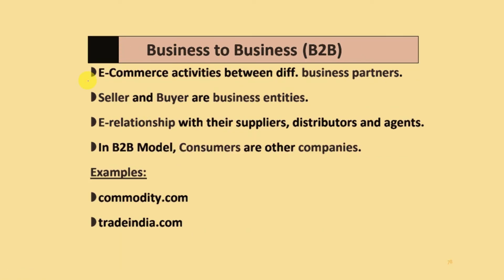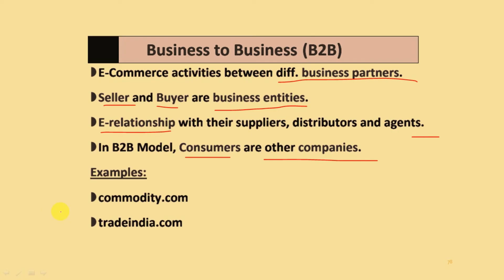Business to Business (B2B): this involves activities between different business partners. Both sellers and buyers are business entities. It includes e-relationships with suppliers, distributors, and agents. In the B2B model, consumers are other companies. Examples are commodity.com and TradeIndia.com.